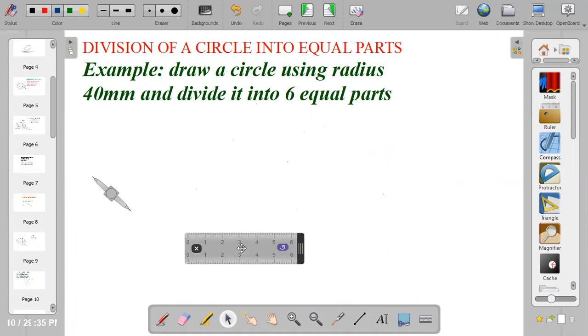Bring out your ruler and measure a radius that is equal to the given diameter. That is 40 multiplied by 2.